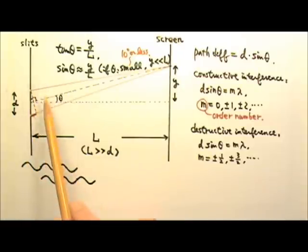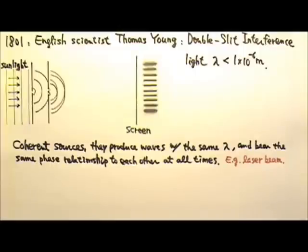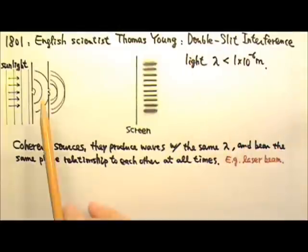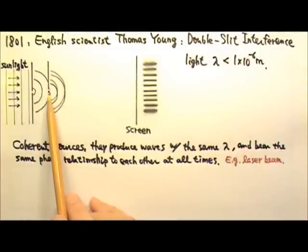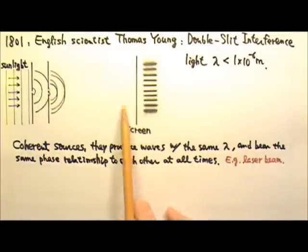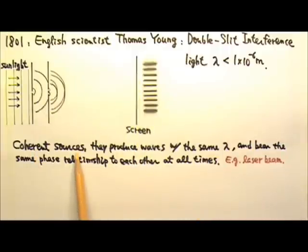So for double slit interference, we need coherent sources to produce the interference pattern. And the coherent sources produce waves with the same wavelength and bear the same phase relationship to each other at all times.